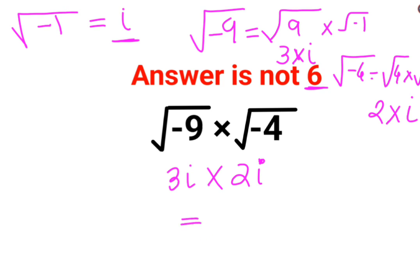So this becomes 6 multiplied by i square. Now if root of negative 1 is i, then I can say i square will be square of root of negative 1, which becomes just minus 1.